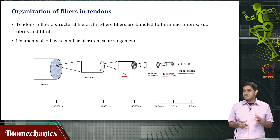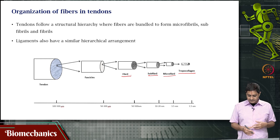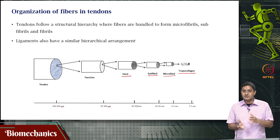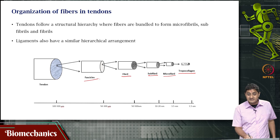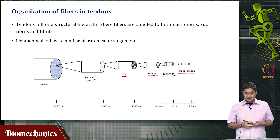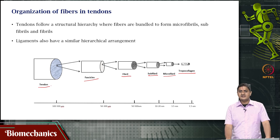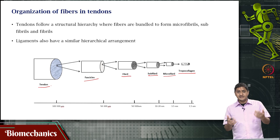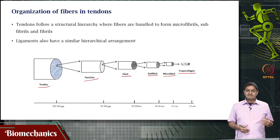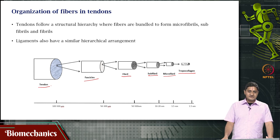When you are in the hundreds of nanometers range, you are getting closer to the micrometer scale — 500 nanometers is half a micron. Many fibrils put together form a fascicle, which is in the microscale — tens to hundreds of microns. Then you have the tendon itself, whose diameter is in the hundreds of microns to millimeters scale, though the whole tendon may have a cross-sectional area on the order of centimeters squared.